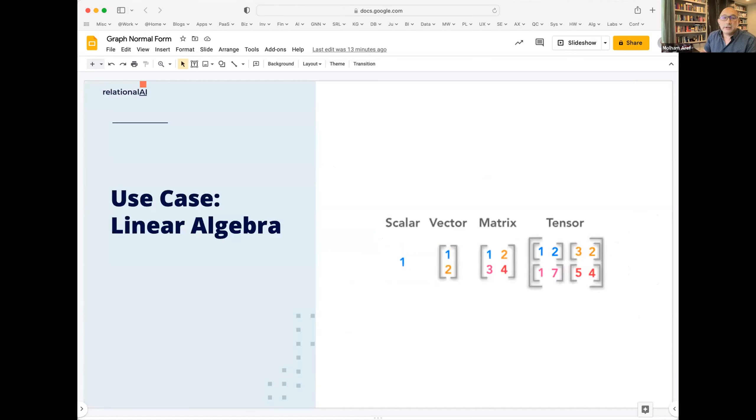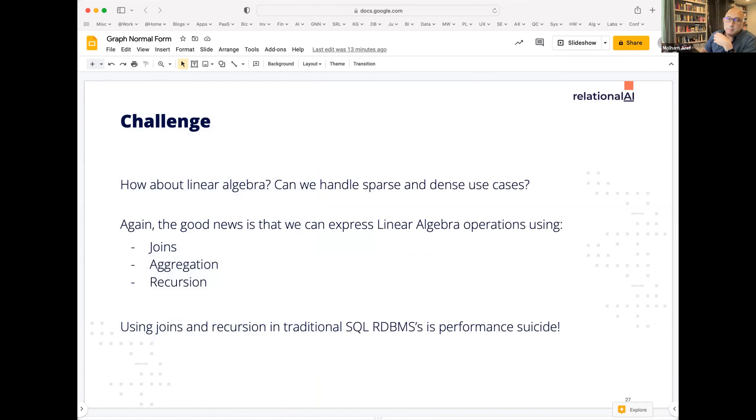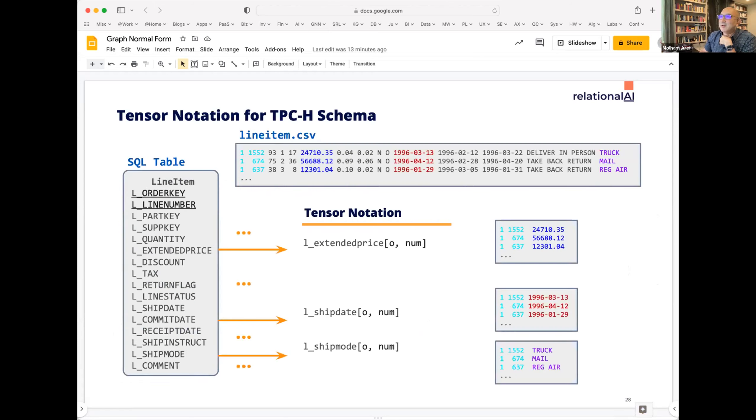Let me show you a couple more use cases. Linear algebra actually falls out of this as well. Linear algebra libraries tend to conflate or be specialized for sparse and dense and all of that. All of these things are physical concerns that really should be in the background and the relational model relieves us from having to care about physical representation concerns. And so if you have that joins aggregation recursion, you can do linear algebra. Historically, that has been performance suicide. Again, systems like Umbra at Sider have shown that you can actually do a really good job of sparse linear algebra with relational machinery.